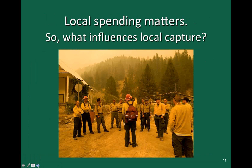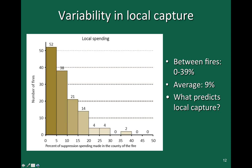If local spending matters, what influences whether a community captures that fire suppression spending? There's a really wide variation in local capture of fire suppression spending. By local capture, we mean money from the fire spent on paychecks, credit card swipes, and contractors located in the same county where the fire occurred. Money spent by someone who lives somewhere else does not count as local spending. We found that between 0% and 39% of any given fire's suppression spending was spent in the county where the fire occurred, with an average of about 9%.